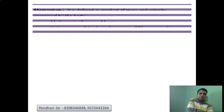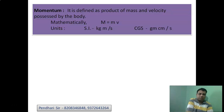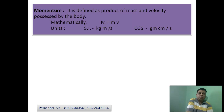Let us start with the first part — Momentum. Momentum is defined as the product of mass and velocity possessed by the body. Mathematically, Momentum M equals m into v. Mass unit is kg, velocity unit is meter per second, so the unit of momentum is kg·m/s or gram·cm/s. This is important from an exam point of view.